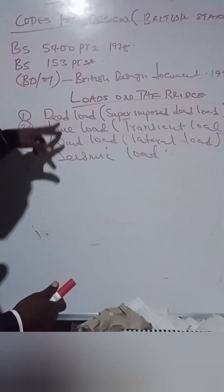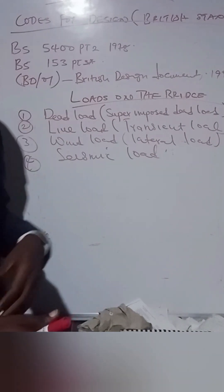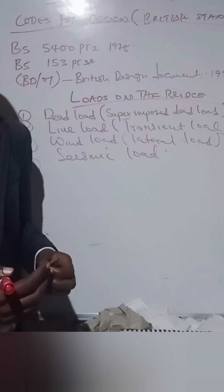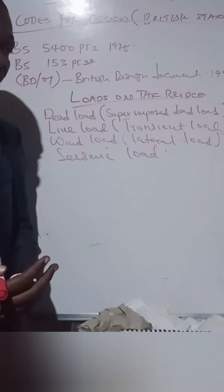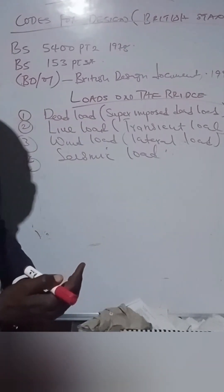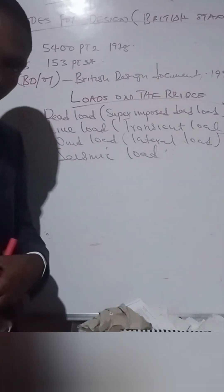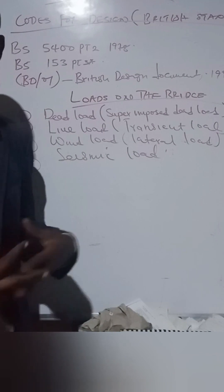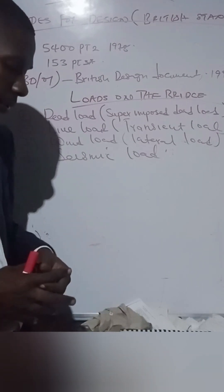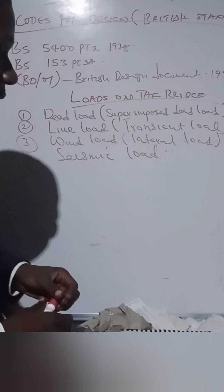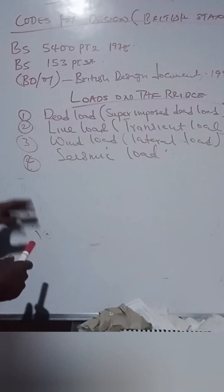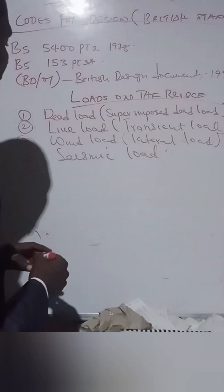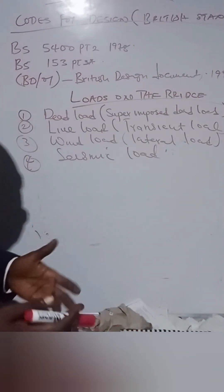Most importantly, I'm going to talk about the live load. In designing of the bridge, what is of most concern to the engineer is the live load, because the dead load and other loads can be quite easily obtained. But for live loads, numerous calculations have been done to analyze structures under their influence. Under BS 5400, there are basically two live loads acting on the deck of the bridge.